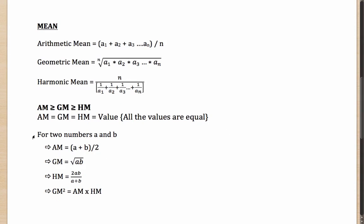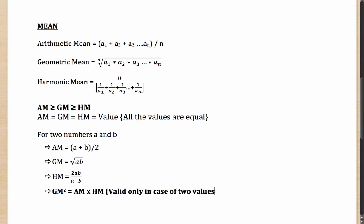It helps to know the results for two numbers A and B. Arithmetic mean is (A+B)/2. Geometric mean is √(A×B). Harmonic mean is 2/(1/A + 1/B), which simplifies to 2AB/(A+B). Also note that GM² = AM × HM. Please note this formula is valid only for two values — students often make this mistake. GM² = AM × HM is valid only when you have two numbers A and B, not for three or more values.